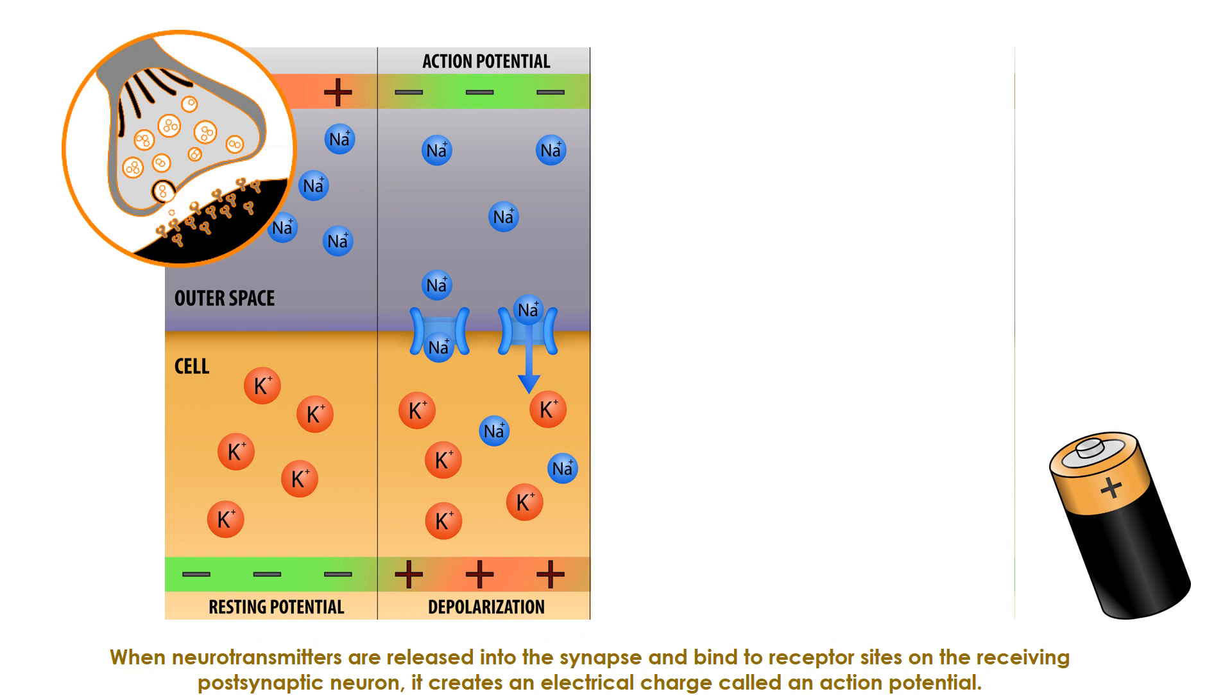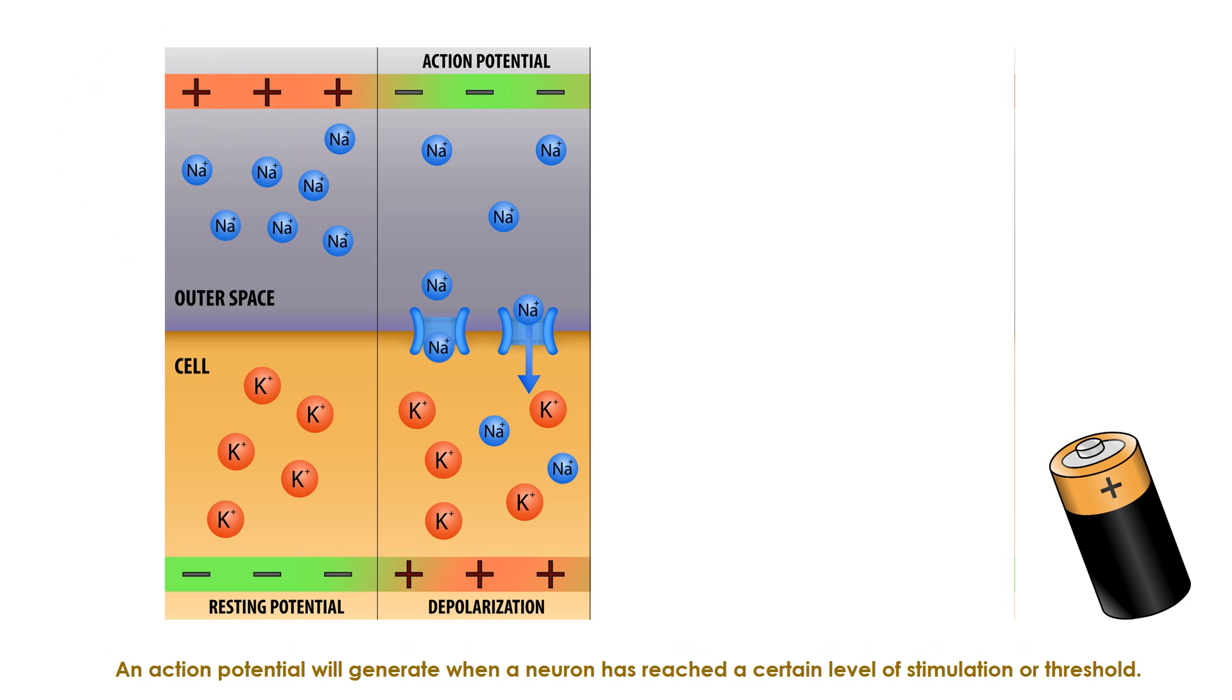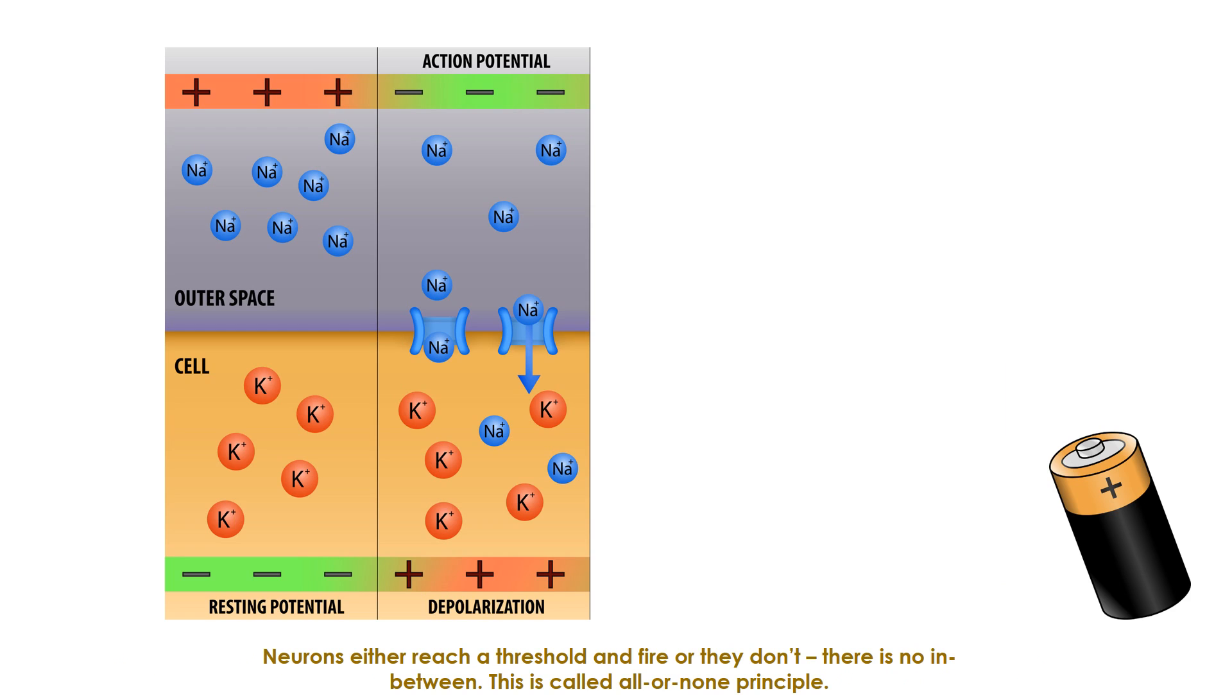When neurotransmitters are released into the synapse and bind to receptor sites on the receiving postsynaptic neuron, it creates an electrical charge called an action potential. An action potential will generate when a neuron has reached a certain level of stimulation or threshold. Neurons either reach a threshold and fire or they don't. There is no in-between. This is called all-or-none principle.